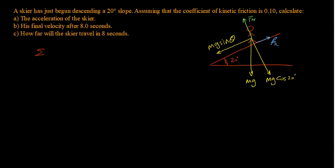To calculate the acceleration, we know from Newton's second law that the total forces equal mass times acceleration. Along the incline, the net force is mg sine theta minus the kinetic friction force, and that equals ma.